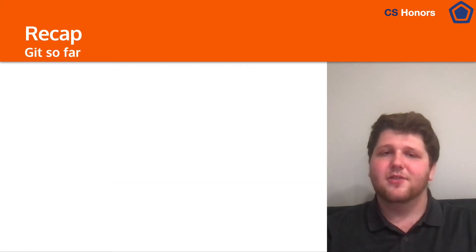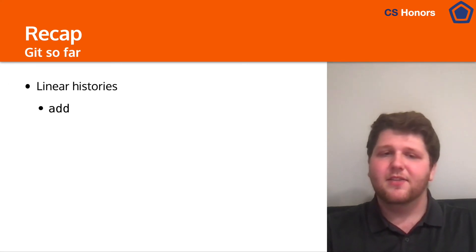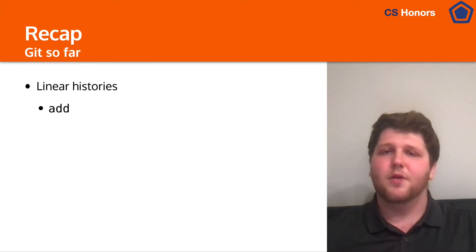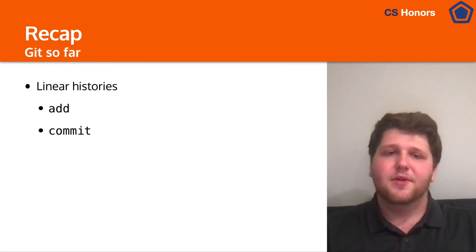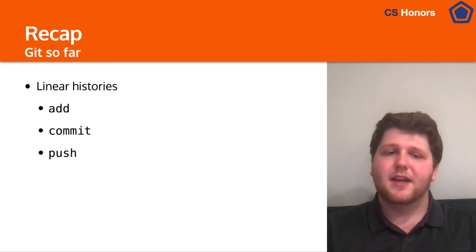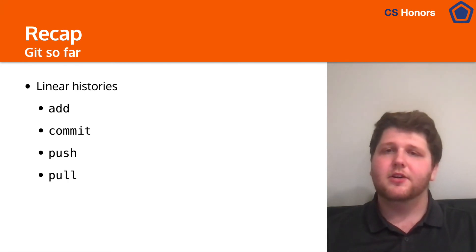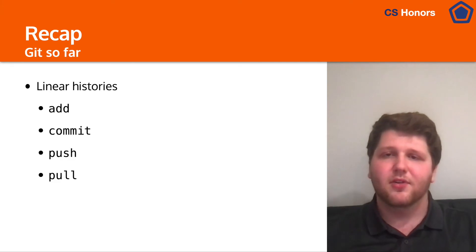So let's get back to Git. To recap what we did in the last lecture, we talked about linear histories, including how we can add files to tell Git what we want to take a snapshot of. We can commit them, or take that snapshot of the file at a certain time. We can then push them to an external server so that other people can access our commits, and then we can pull other people's commits from that same server.